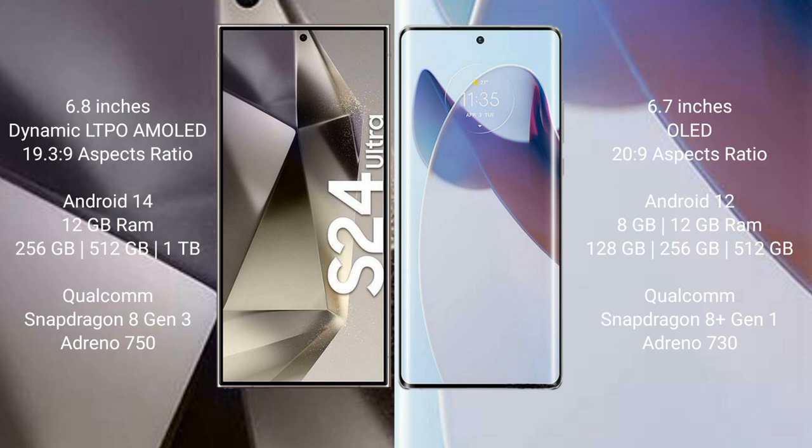Samsung Galaxy S24 Ultra comes with 12GB RAM and 256GB, 512GB, or 1TB internal storage, with a Qualcomm Snapdragon 8 Gen 3 processor and Adreno 750 GPU. Motorola Moto X30 Pro comes with 8GB or 12GB RAM and 128GB internal storage.